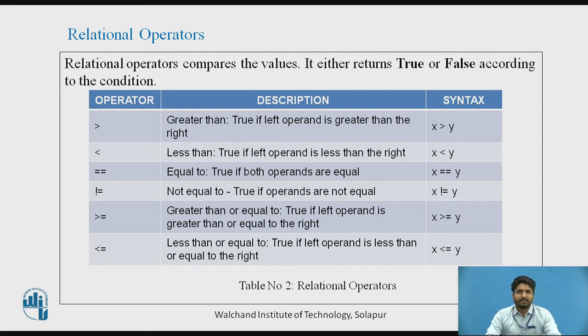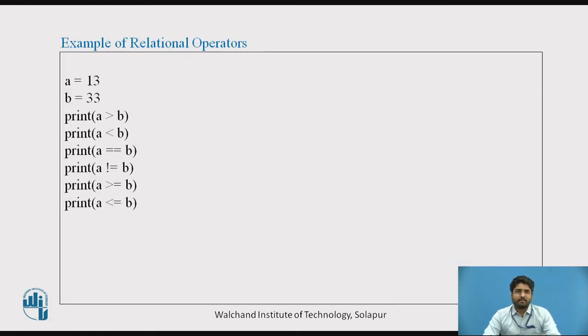Example of relational operators: I have taken a as 13, b as 33. Then I have directly used the output function print: a is greater than b (it must show the output as false), if a is less than b, if a is equal to b, is a not equal to b, a greater than or equal to b, a less than or equal to b.